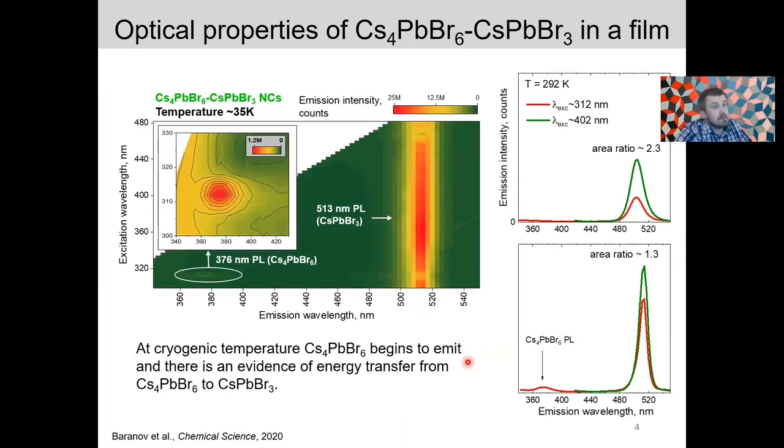So that allowed us to look at the optical properties of these heterostructures in the film together with the polymer. So while they were converting, we quickly drop cast them and then cool them down to 35 kelvins and measure excitation emission maps where we see presence of both emission from the zero-dimensional fragment and perovskite. So emission is dominated by the emission of the perovskite part. So then by analyzing integrals of the emission spectrum, different temperatures and excitation wavelengths, we discovered that there is evidence of energy transfer from zero-D to 3-D part in these particles, which is quite interesting.